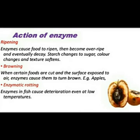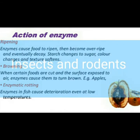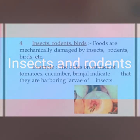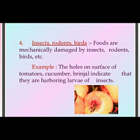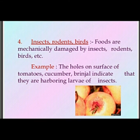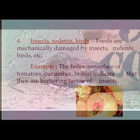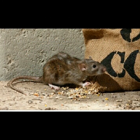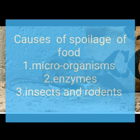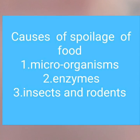Enzymes in fish cause deterioration even at low temperatures. The fourth cause of food spoilage is insects and rodents. In summary, the main causes of food spoilage are microorganisms, enzymes, insects, and rodents.